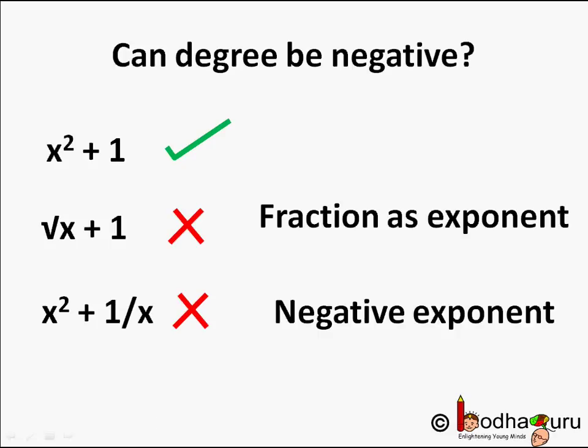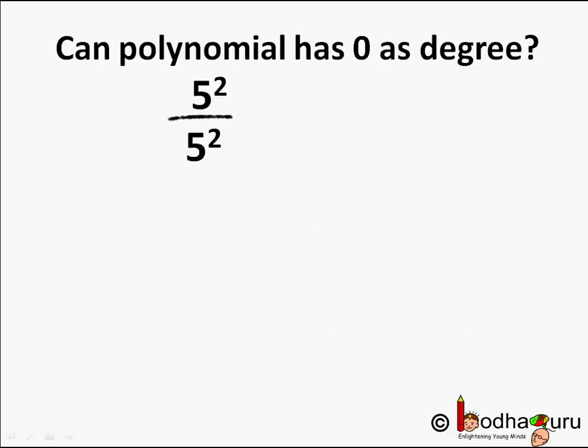Can a polynomial have 0 as a degree? Yes, it can. What is x to the power 0? Let's understand it. If we divide 5 square by 5 square, we get 1 as we are dividing by the same number. But in this case, the exponent becomes 0 as during the division we subtract the exponent, 2 minus 2, which makes it 0. 5 to the power 0, which is equal to 1.